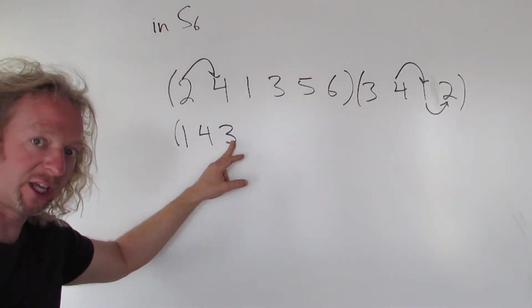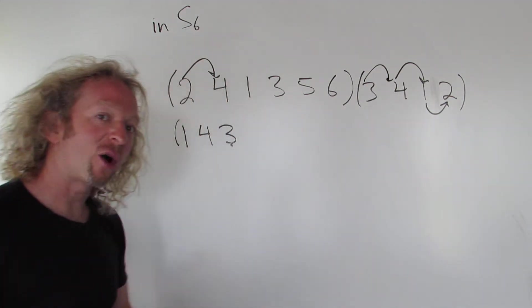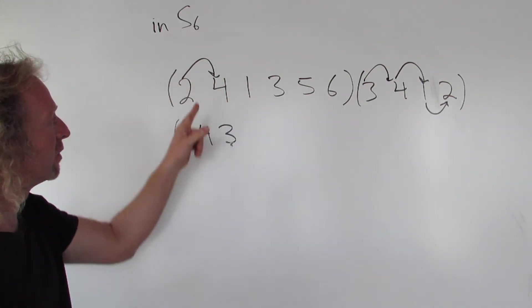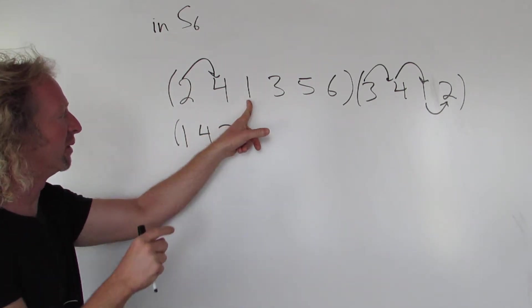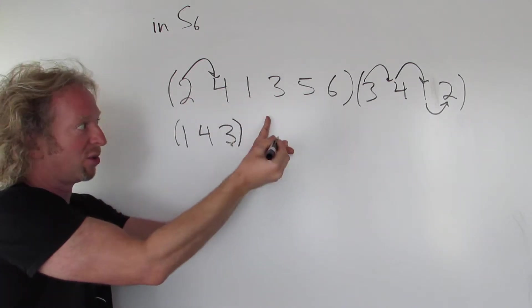Now you go to the three. Be really careful. So three goes to four. So now we look for the four. Four goes to one. Oh wait, but look, the one's over here, so we close it. Because that means three goes to one.